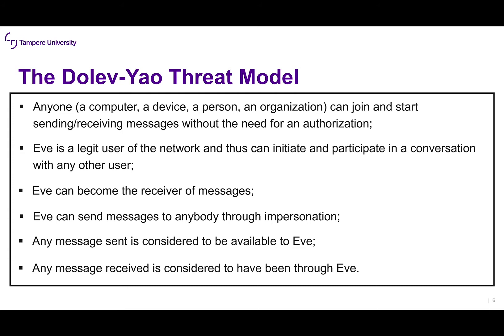What does the Dolev-Yao threat model say? First, anyone can join and start sending and receiving messages without any authorization. So you have a protocol, and even Eve can join and be part of it. Eve is a legitimate user of the network and can initiate and participate in a conversation with any other user. Whenever Eve is communicating with Alice, Alice does not know that Eve is a malicious entity.